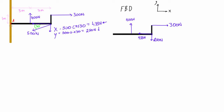The other thing we have to add on is our reaction forces at A, caused by the fixed support. As we saw in the last video, a fixed support can provide a reaction in the X direction, in the Y direction, and it can also apply a moment to the object. If this were a hinge it wouldn't resist a moment, but because it's fixed — bolted to the wall — it will resist rotation with a moment. We'll label these Ax, Ay, and MA.